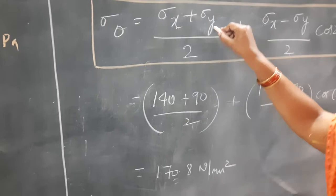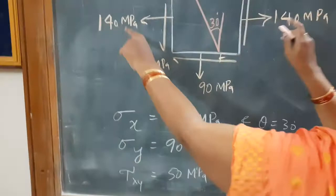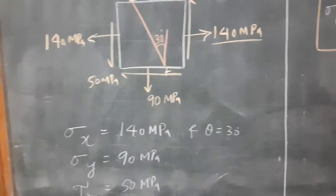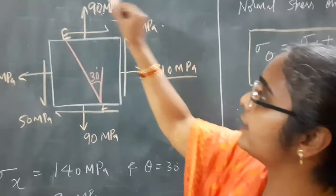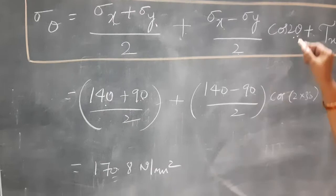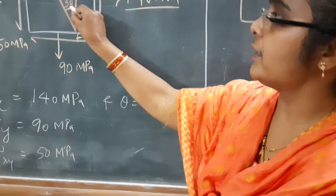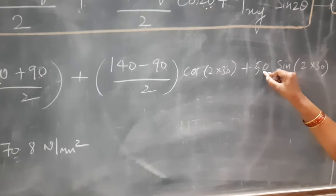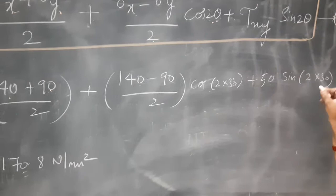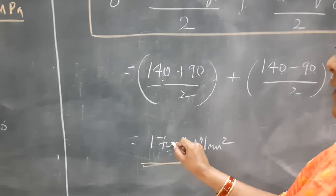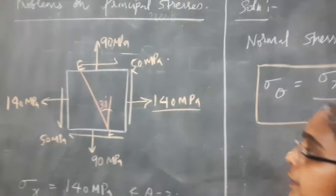Substitute the values of sigma x, sigma y, theta, and tau xy. Sigma x is 140 MPa, sigma y is 90 MPa, theta is 30 degrees, and tau xy is 50 MPa. Substituting into the formula with cos(2×30°) and sin(2×30°), the calculation gives a normal stress of 170.8 Newton per mm squared. This is the normal stress acting on the inclined plane EF.